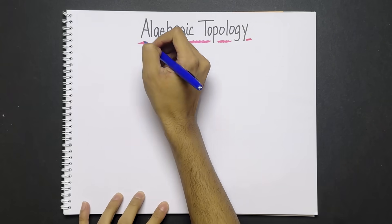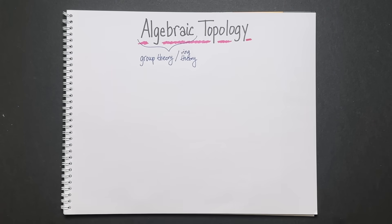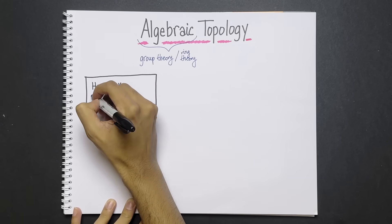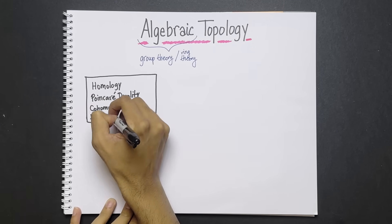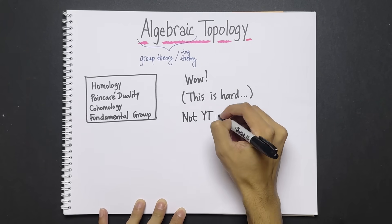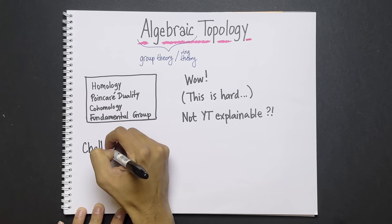You see, algebraic topology is the study of using algebra, so group theory and ring theory, to study spaces and topology. There, I finally got to learn all the precise definitions in the subject. It was so beautiful and so fascinating, but it was really complicated. These concepts simply weren't YouTube explainable. But if you know me, there's nothing I love more than a challenge.